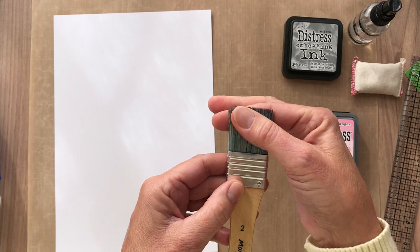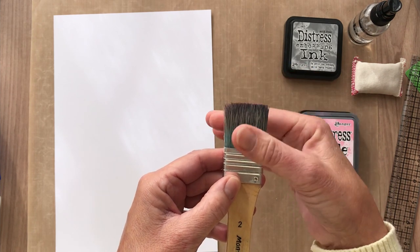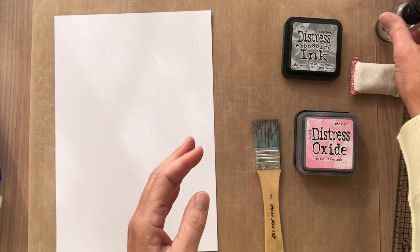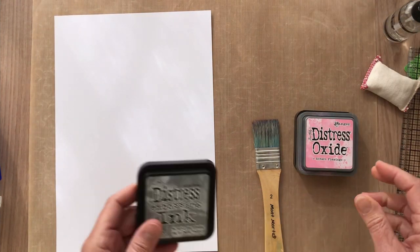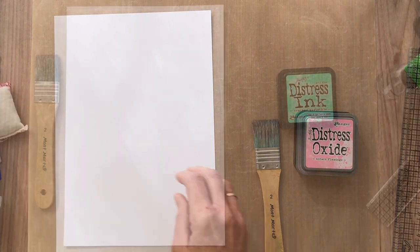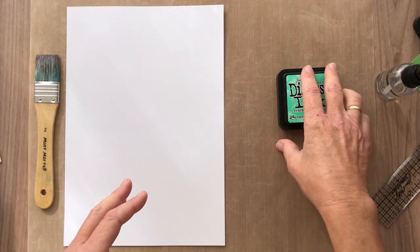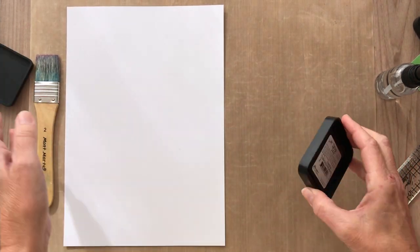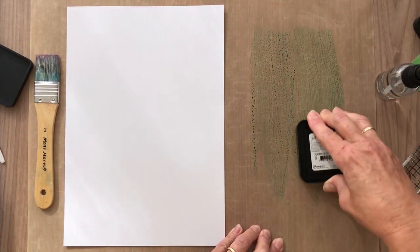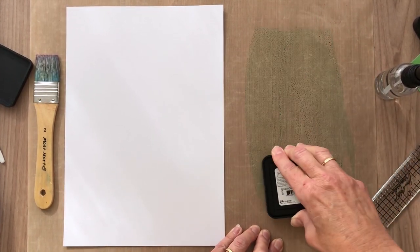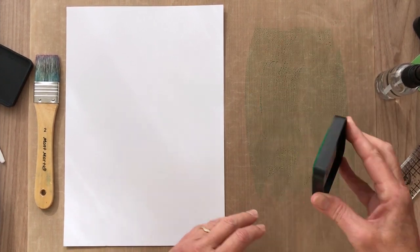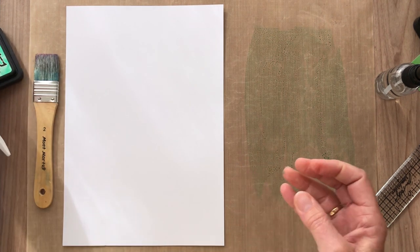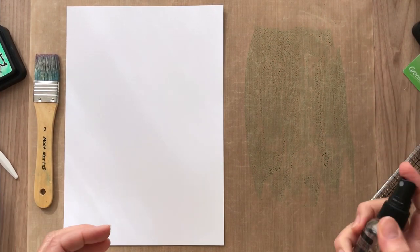I've gone ahead and dampened my brush down so it's just damp, not wet. To get started I'm going to be using my Cracked Pistachio. All I'm doing is putting some down on my Teflon craft mat like this, a fairly generous amount because I'm doing the whole A4 paper, and I'm going to add a little bit of water.